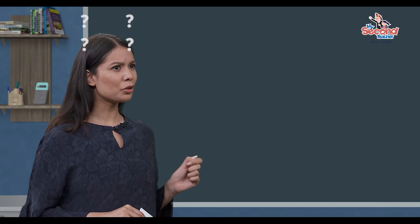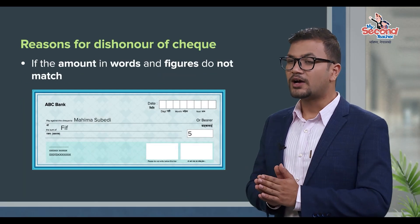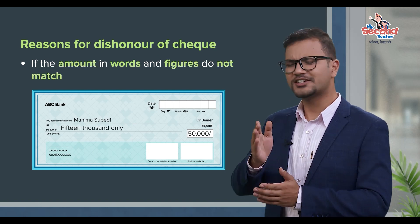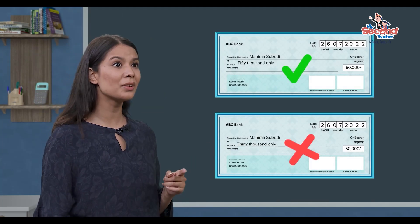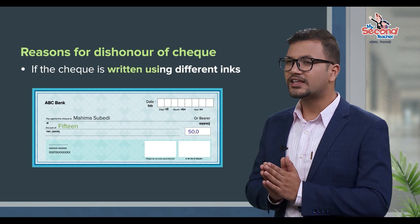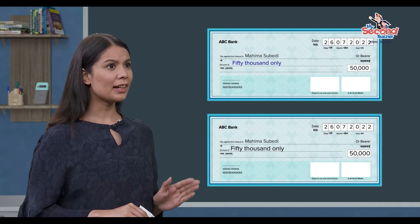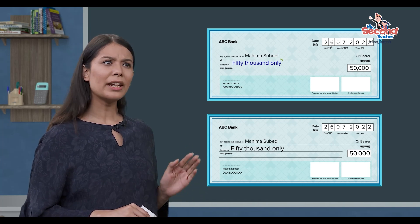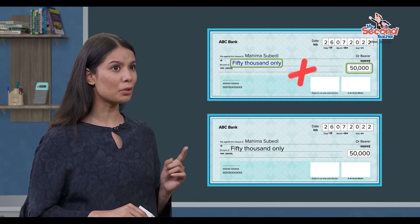The check is dishonored when the amount written in words and figures do not match. The amount in words and figures should be the same. Also, the check should be written consistently — if different ink is used, it can be dishonored. One part written in blue ink and another in black ink can cause dishonor.